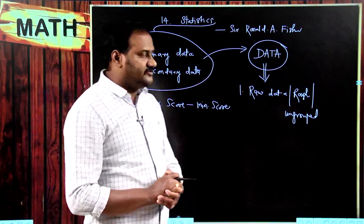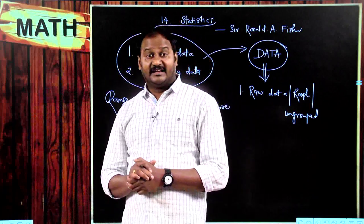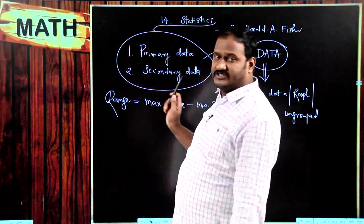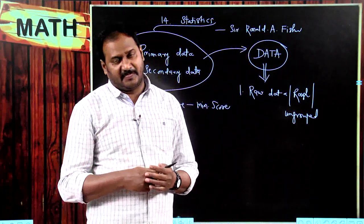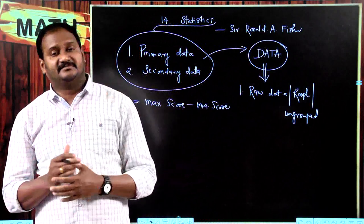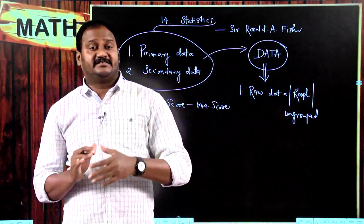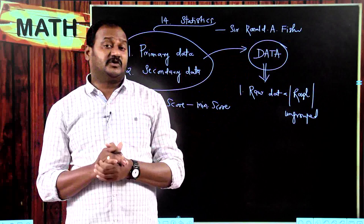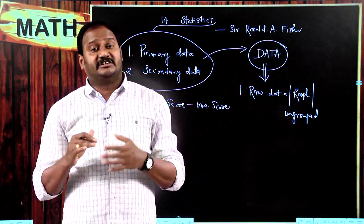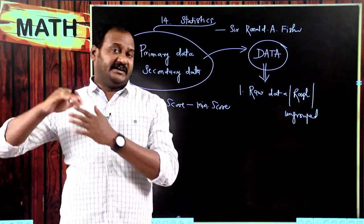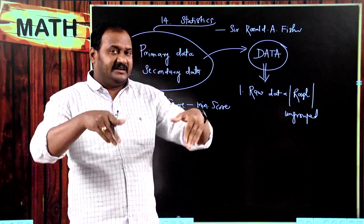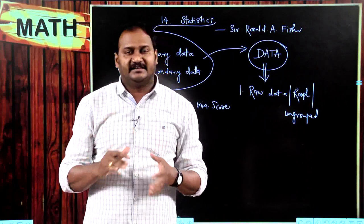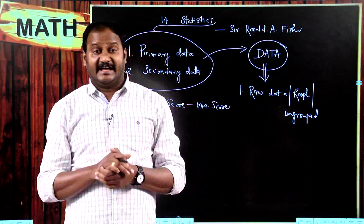Let me tell you some important and interesting points about range. According to the definition, range equals highest score minus lowest score. Suppose I have the first 10 natural numbers: 1, 2, 3, 4, 5, 6, 7, 8, 9, 10. To find the range, the maximum is 10 and the minimum is 1, so 10 minus 1 equals 9. The range of the first 10 natural numbers is 9.